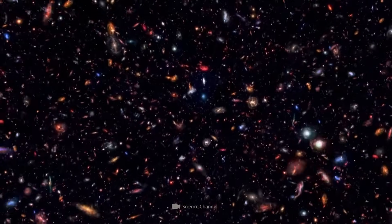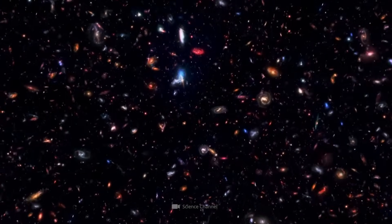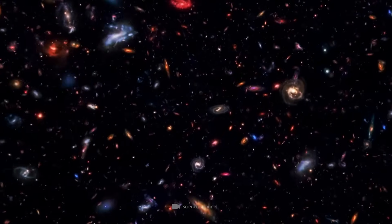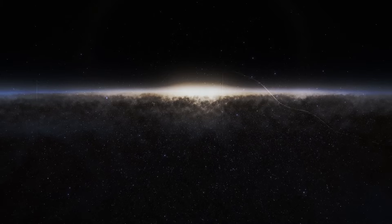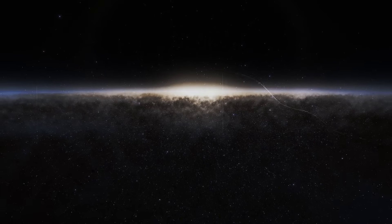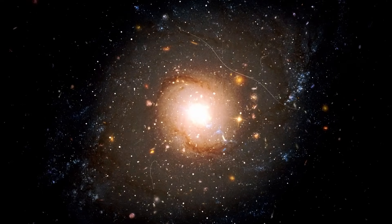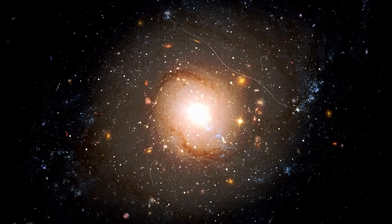An international research team led by the Leibniz Institute for Astrophysics in Potsdam used a novel cosmographic representation method to analyze the movements of 56,000 galaxies. This has resulted in the most up-to-date map of the local universe, and it reveals impressive new cosmic structures.